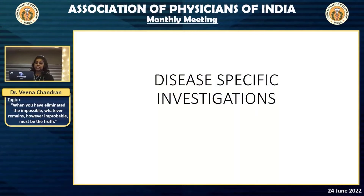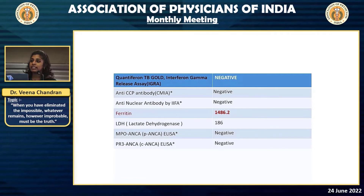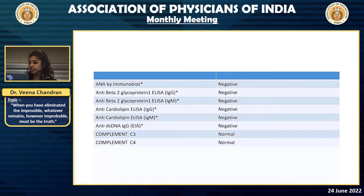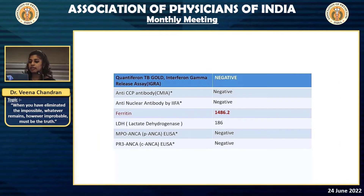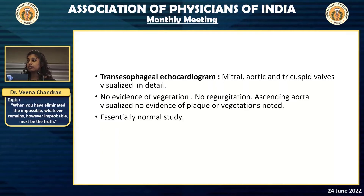Moving on to disease-specific investigations: we ran tropical infection panels along with syphilis serology and galactomannan, which all came back negative. Vasculitic workup was also negative. The only significant finding was an elevated ferritin level at 1486. We did a transesophageal echo in view of suspected infective endocarditis, and it was found to have no vegetations or plaques.